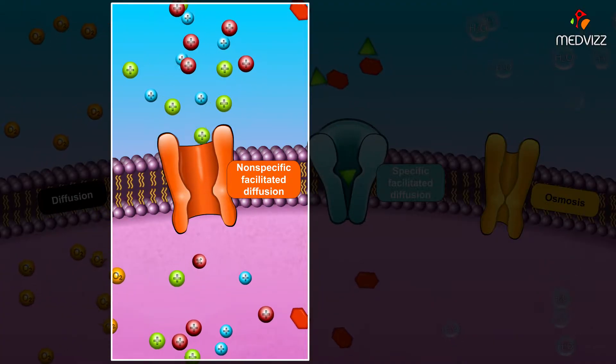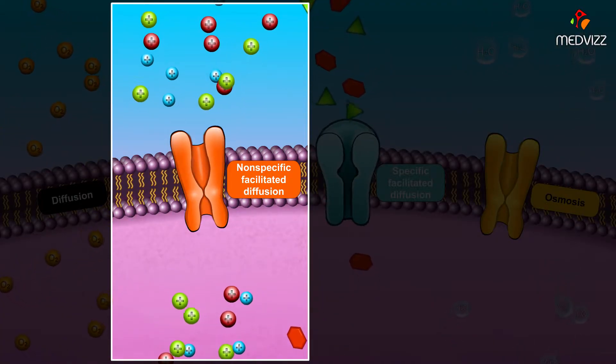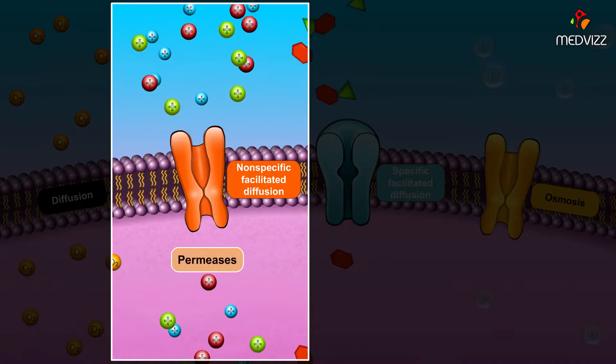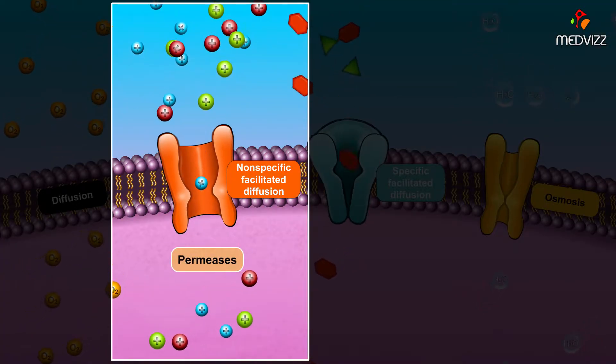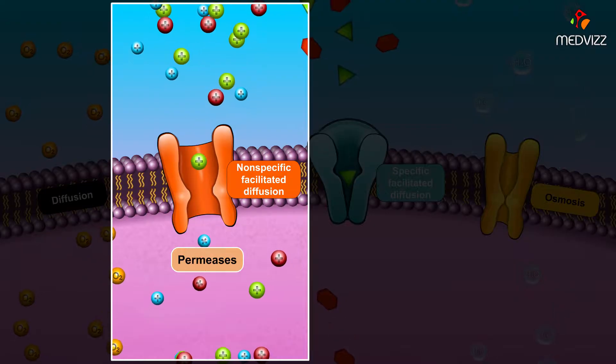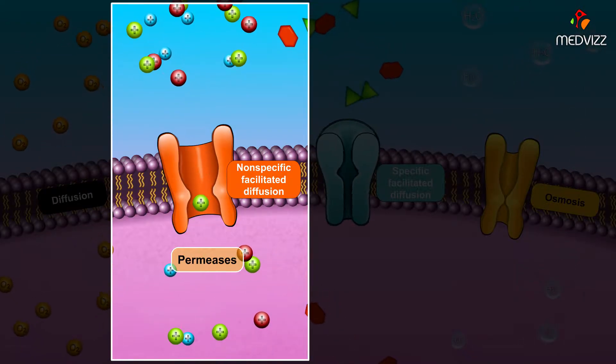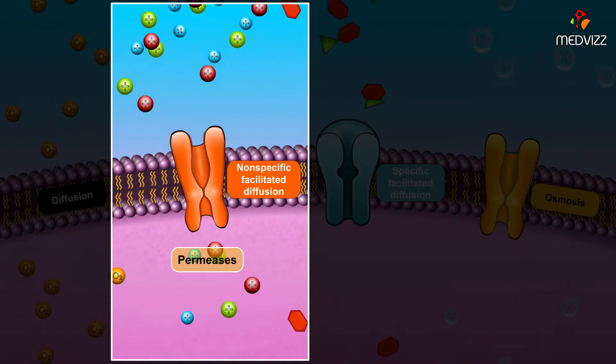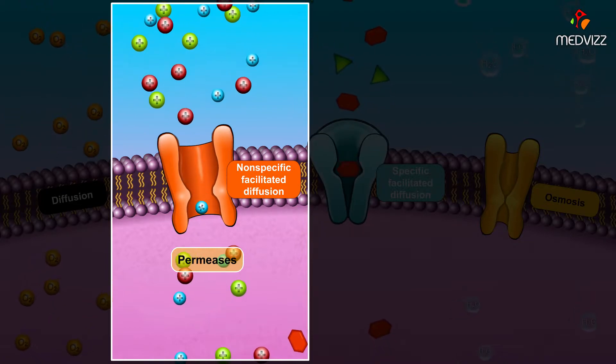Nonspecific facilitated diffusion is passive transport allowed by transmembrane proteins called permeases. In the case of nonspecific facilitated diffusion, these permeases allow a wide range of molecules that meet charge or size criteria to pass through their channel.